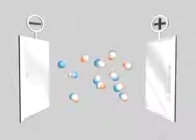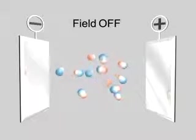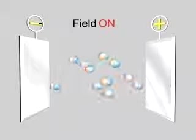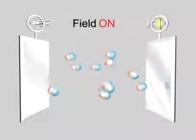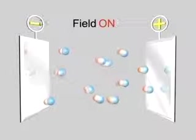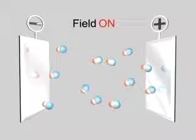Between two electric plates with the field off, the molecules lie every which way. With the field on, however, they become oriented with their negative ends facing the positive plate and their positive ends facing the negative plate.